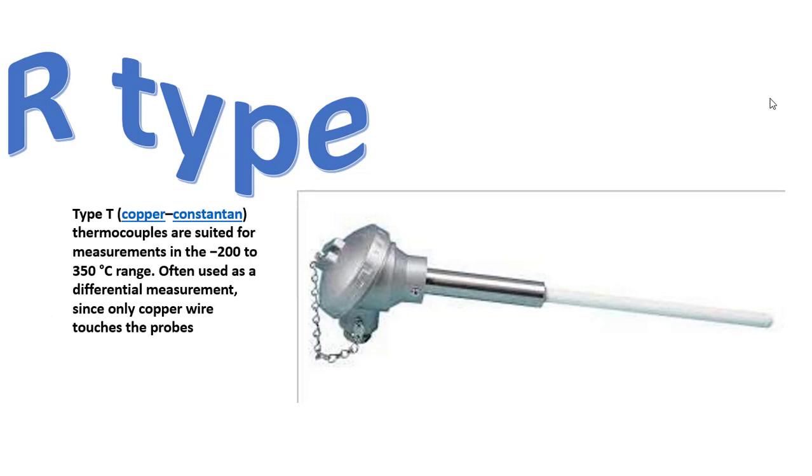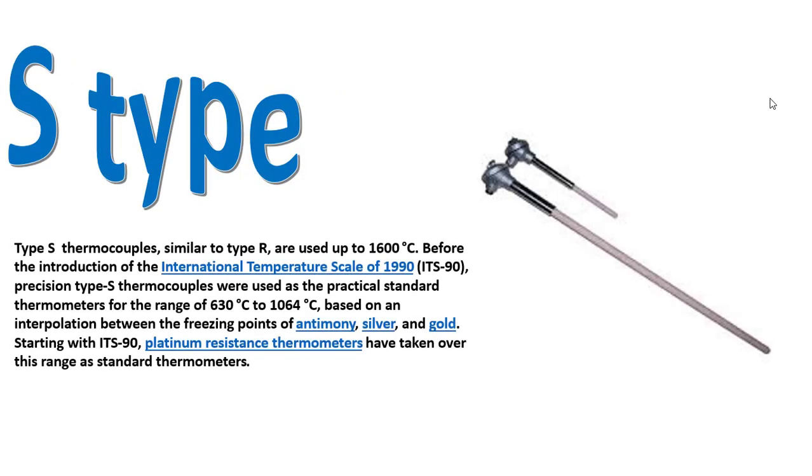Type T thermocouples are used for measurements in the -200°C to 350°C range and are often used for differential measurement, since only copper wire touches the probe.